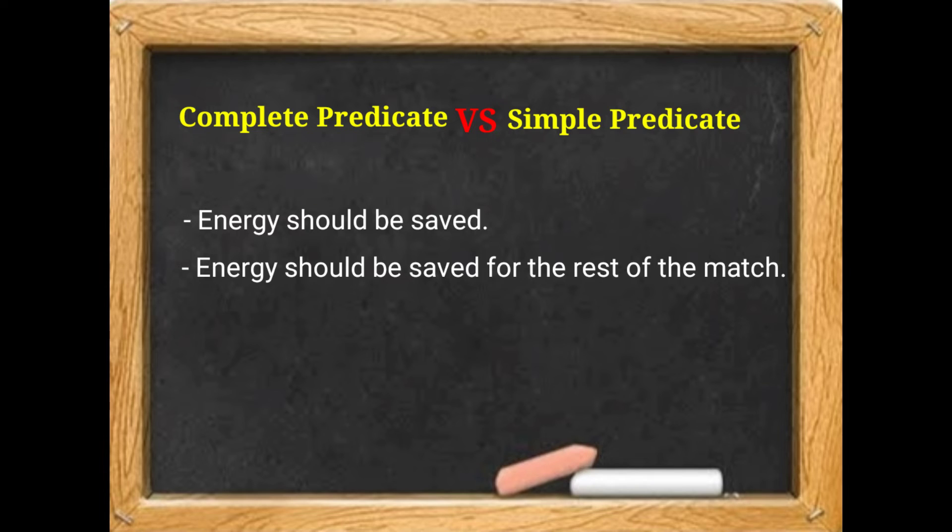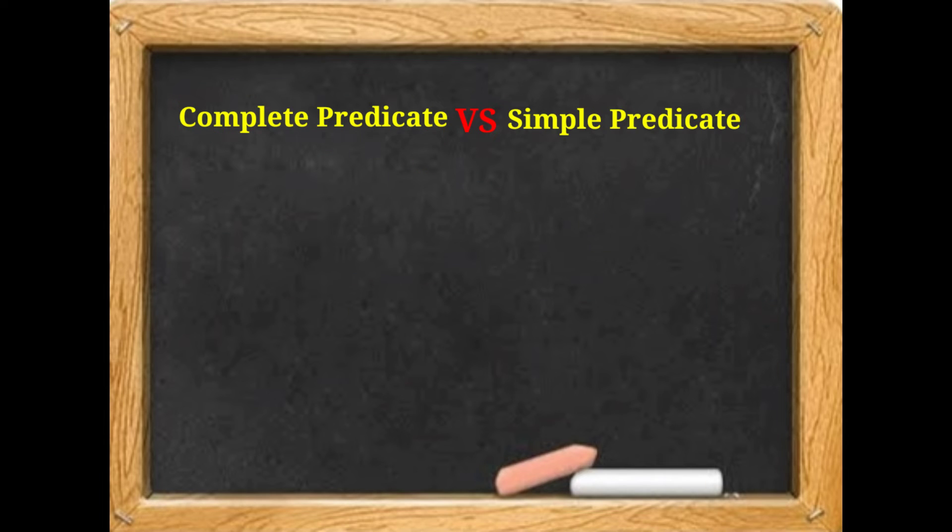In the first example, 'energy should be saved,' should be saved is simple predicate. But in the second example, 'energy should be saved for the rest of the match,' should be saved for the rest of the match is complete predicate. Well done.